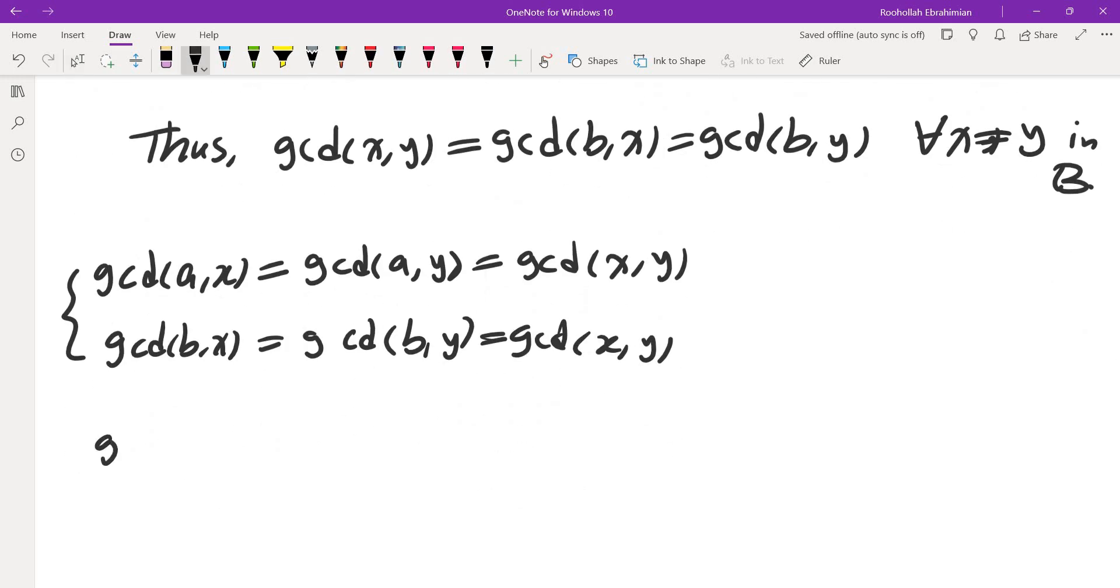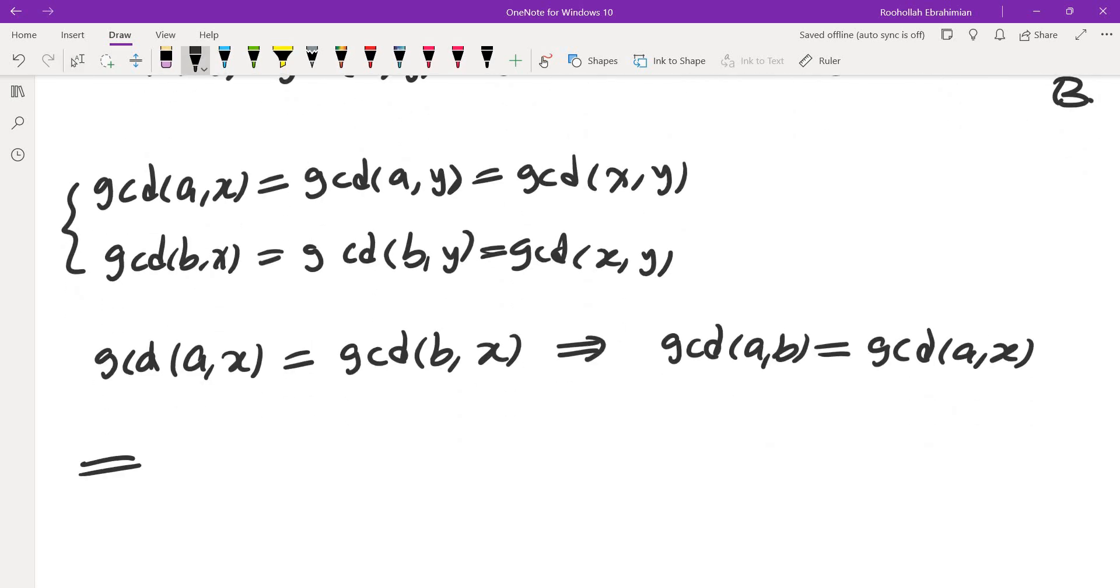So this means I have gcd(A,X) is the same as gcd(B,X). A, X and B are distinct, so that means gcd(A,B) must be the same as gcd(A,X). So this tells us gcd(A,Y) is the same as gcd(A,X) is the same as gcd(X,Y) for every X, Y in B with X not equal to Y.